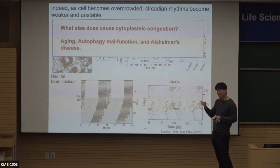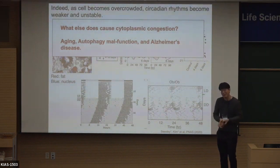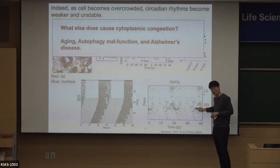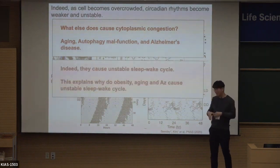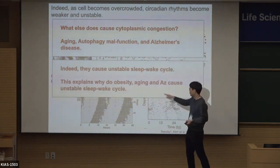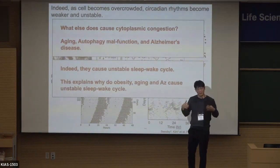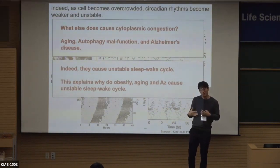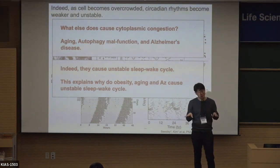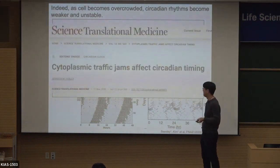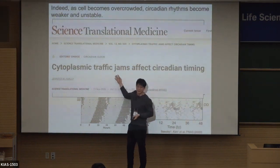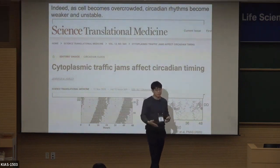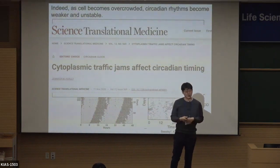What else can make a cell more crowded? Aging, autophagy malfunction, and Alzheimer's disease are all known to increase cytoplasmic congestion. We found that mice with all three of these phenotypes show disrupted sleep-wake cycles. And in a clinical study, even in humans — obese individuals, aging individuals, and Alzheimer's patients — all had sleep cycle problems. Our study suggests they all have an unstable sleep cycle because their cytoplasmic congestion level is too high. This cytoplasmic traffic-peak jam could be a new target for treating unstable sleep cycles.